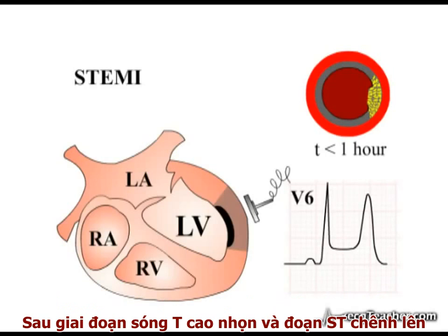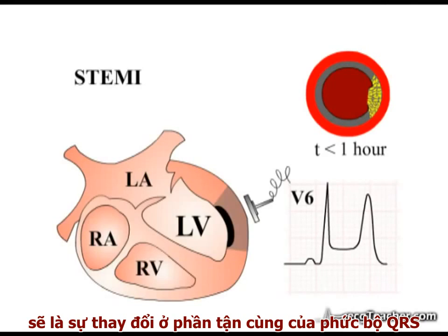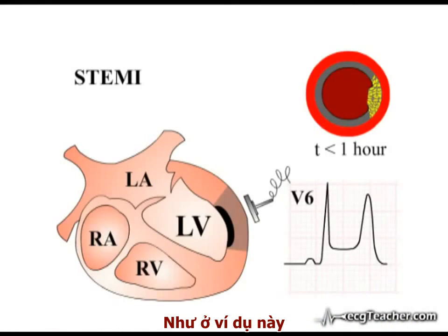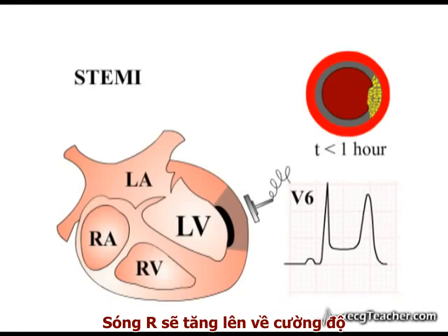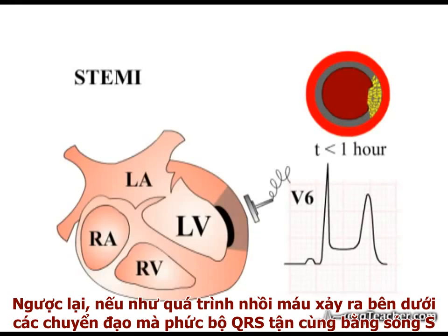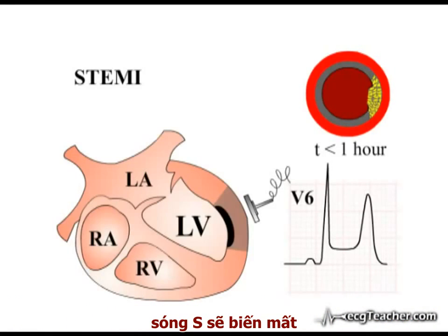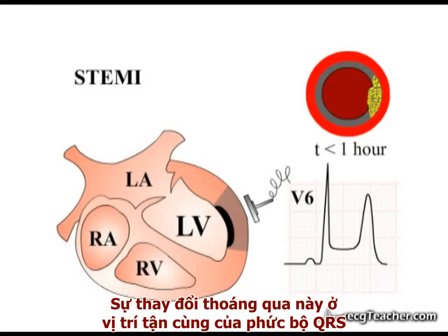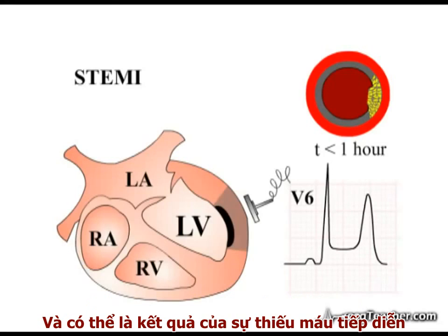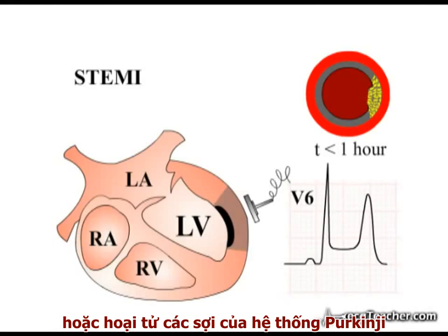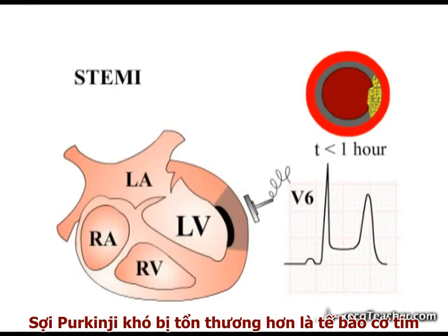In the absence of treatment, peaked T-waves and ST segment elevation are followed by alterations to the terminal portion of the QRS complex. In a lead in which the QRS complex ends with an R-wave, the R-wave rises in amplitude. In contrast, if infarction occurs under leads in which the QRS complex ends with an S-wave, the S-wave may disappear. These transient changes to the terminal portion of the QRS complex reflect worsening crisis in the oxygen-starved ventricular wall, and probably result from progressive ischemia and necrosis of the Purkinje fibers, a tissue more resistant to death than working muscle.